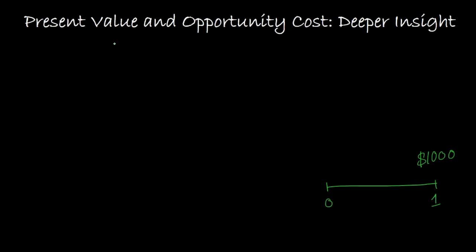Up until now, we've talked about these ideas of present value and net present value in a simple one-period setting. What we've argued is that there is this connection between present value and opportunity costs. More specifically, if somebody comes up to us and promises to give us $1,000 one year out into the future, what we have argued is that in the present, this may only be worth $950.